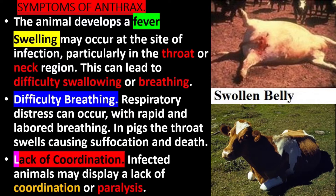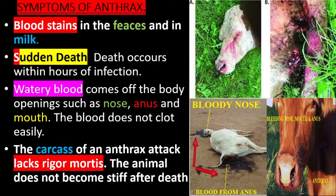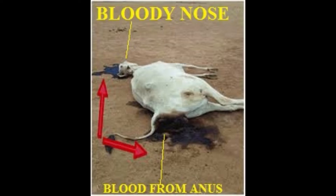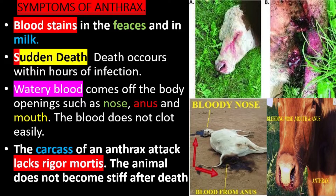Lack of Coordination: Infected animals may display a lack of coordination or paralysis. Blood stains appear in the faeces and in milk. Sudden death often occurs within hours of infection. Watery blood comes from body openings such as the nose, anus, and mouth. The blood does not clot easily. The carcass of an anthrax victim lacks rigor mortis — the animal does not become stiff after death.